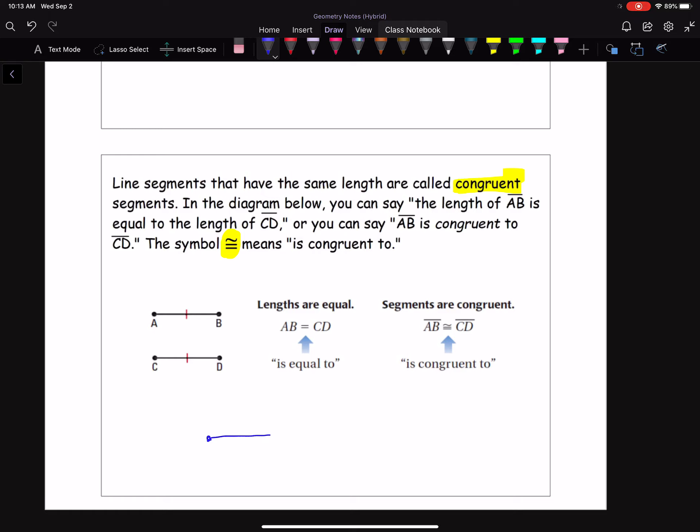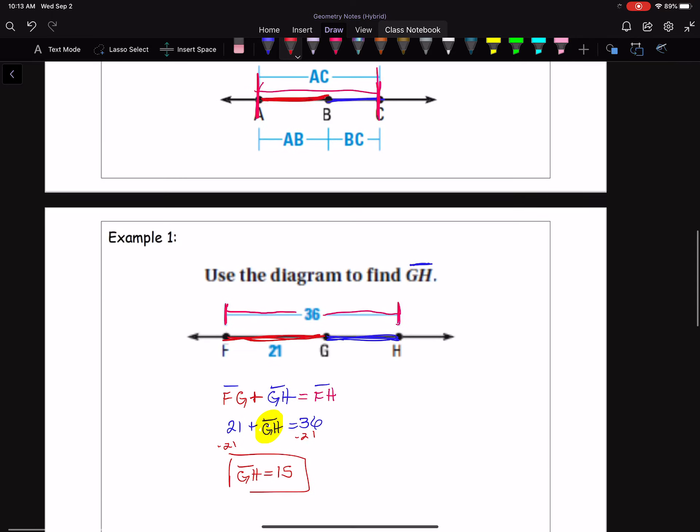So if I have line segment AB, and that is 15, and I have line segment CD, and that's also 15, I could say one of two things. I could say that line segment AB equals CD because they're the same length. Or I could say line segment AB is congruent to CD. And I kind of like writing that little squiggly line, so I'm probably going to go with the second one. But that is it for line segments and the segment addition postulate.